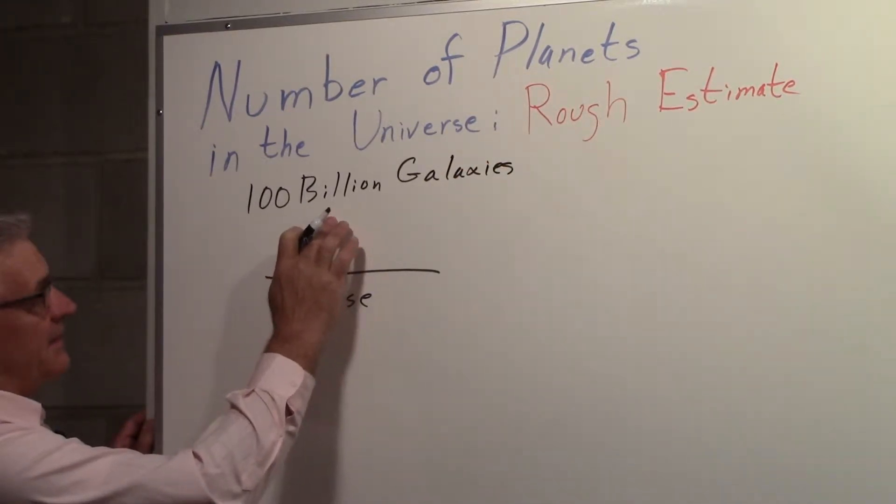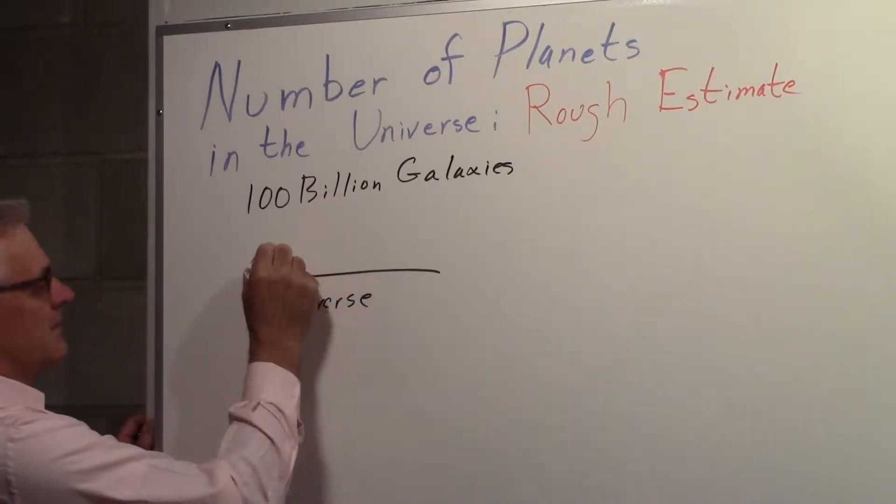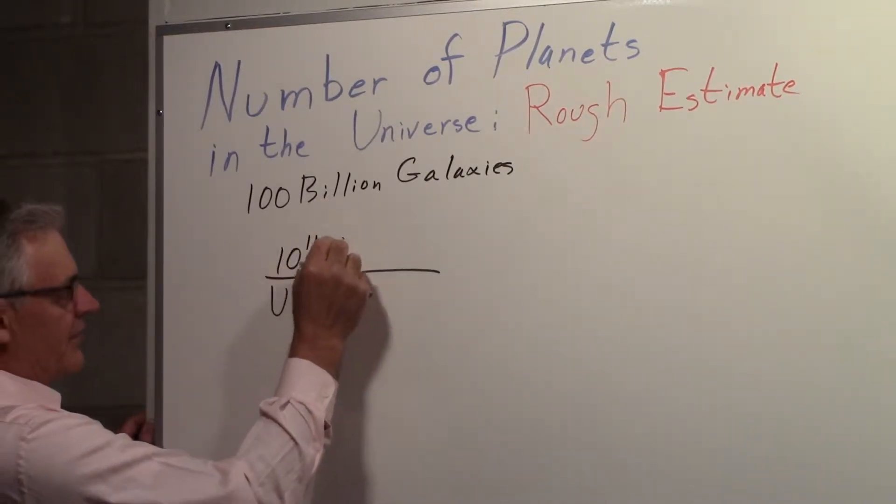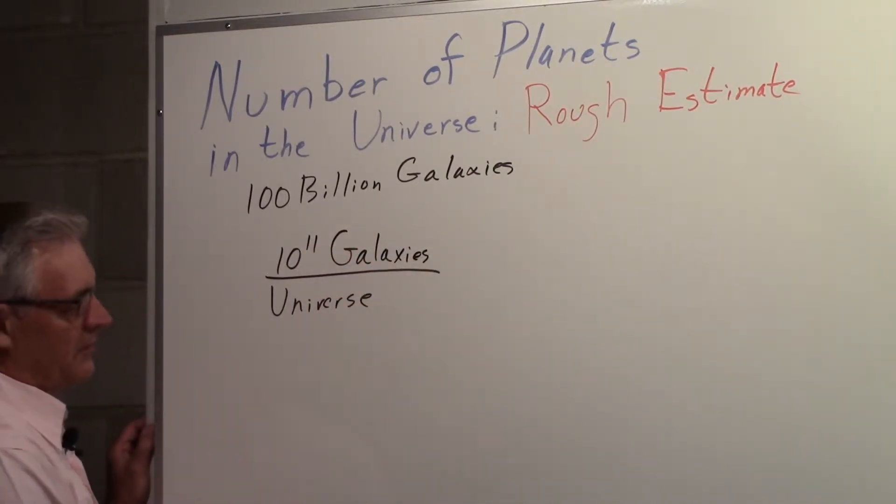A billion is ten to the ninth. A hundred billion would be ten to the eleventh. So there's ten to the eleventh galaxies in the universe.